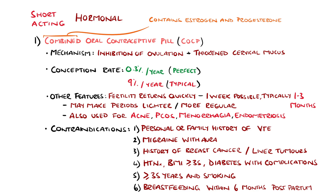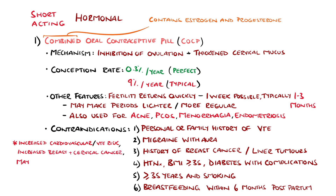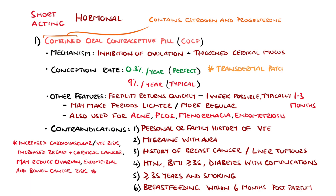Combined hormonal contraception does bring a slight increase in the risk of cardiovascular events, which includes VTE, breast and cervical cancer, but may actually reduce ovarian, endometrial and bowel cancer risk. A complete list of contraindications to all contraceptive methods is available below by the UKMEC. There are also transdermal and vaginal ring preparations that work similarly to the pill.